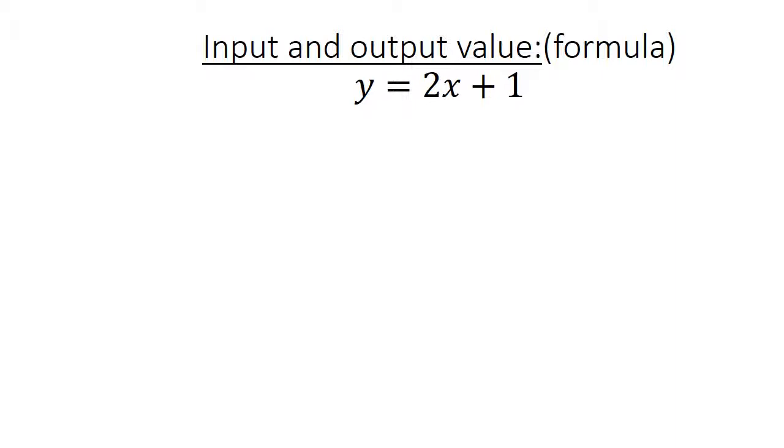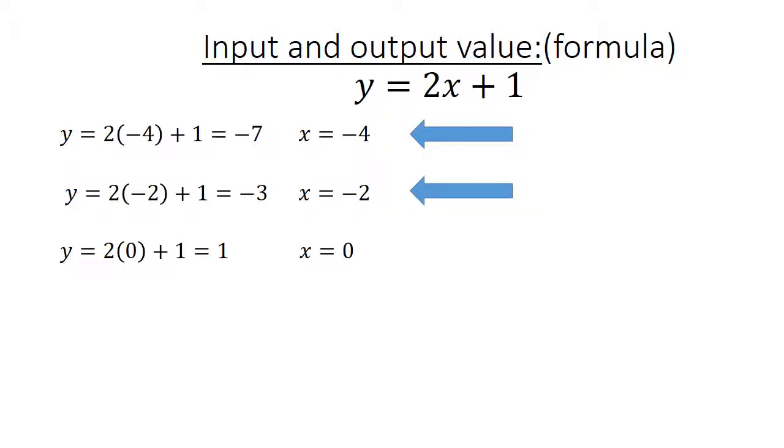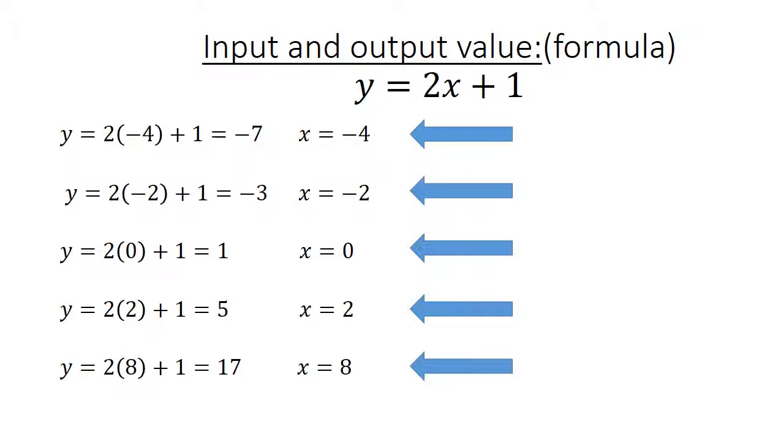Input and output value formula. We use the formula Y equals 2X plus 1. Start with substituting X with negative 4: Y equals negative 7. Substitute X with negative 2: Y equals negative 3. Substitute X with 0: Y equals 1. Substitute X with 2: Y equals 5. Substitute X with 8: Y equals 70.